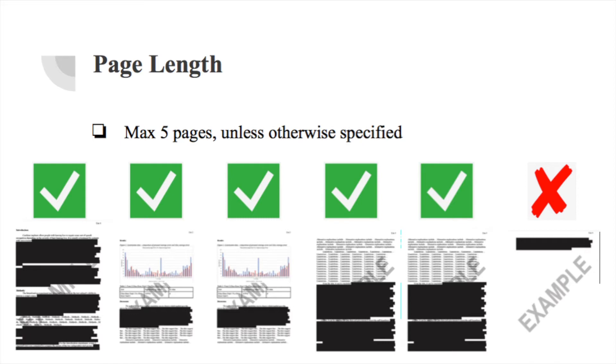Next is the page length. For each of your lab reports, you are allowed up to a maximum of five pages. Note that I said maximum. This does not mean that each of your lab reports should be five pages in length. If you can get all of the necessary information on one page, that is awesome. However, I promise that will not happen.